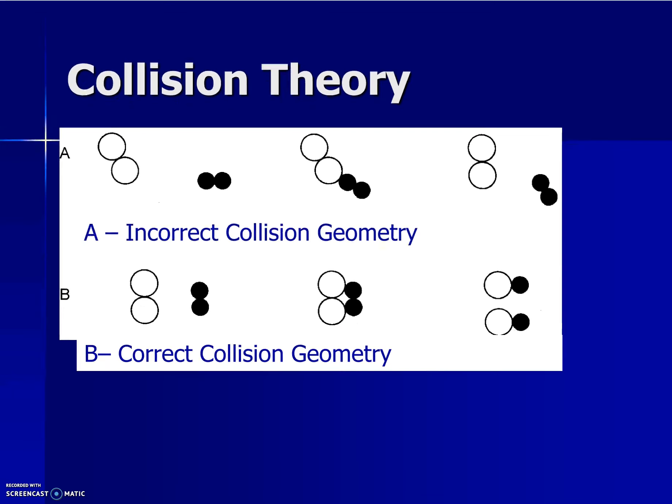So when we're talking about the incorrect geometry or the correct geometry or the correct orientation, for instance, we've got the incorrect geometry in A, where you've got one molecule bumping into another. They're bumping in end to end. This did not cause a reaction to occur. So if a reaction does not occur, they basically bump into each other and move on their way. Nothing happens. They break apart. We do not have a chemical reaction.